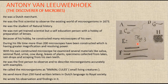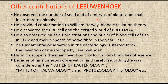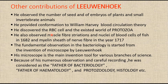Leeuwenhoek also made other contributions: he observed seeds and embryos of plants and small invertebrates, and provided confirmation of William Harvey's blood circulation theory. He discovered RBCs and the existing world of protozoa. He observed muscle fiber striations and the nuclei of blood cells of fish — notably, fish RBCs possess nuclei, which he observed in 1682 — and also described the myelin sheath of nerve fibers in 1770.